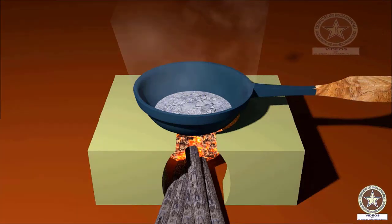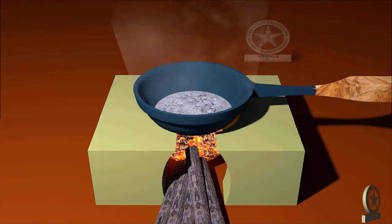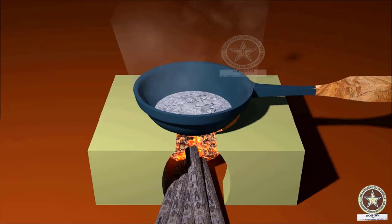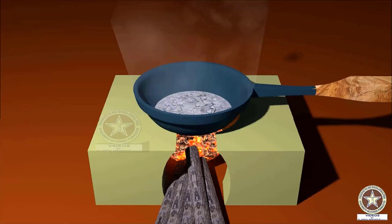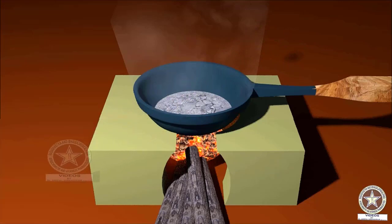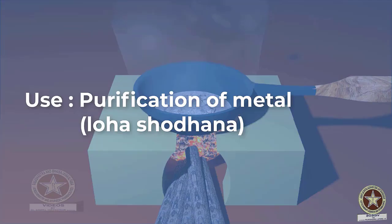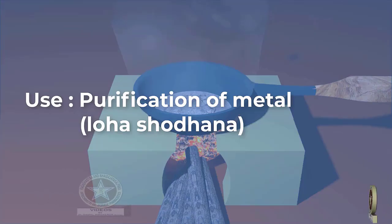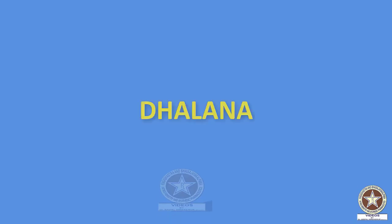According to Prof. Dattatriya Anantu Kulkarni, sprinkling liquid on the molten metal causes impurities to get separated from the metal. Thus, this procedure helps in Shodhana or purification of the metal.